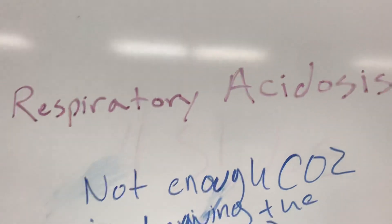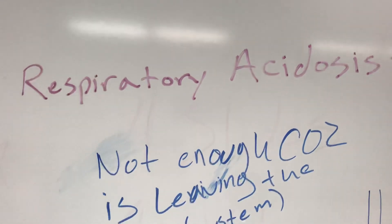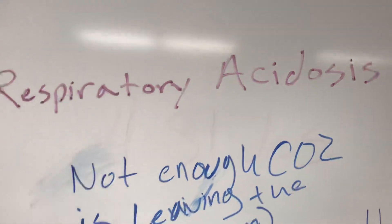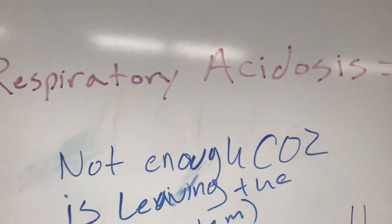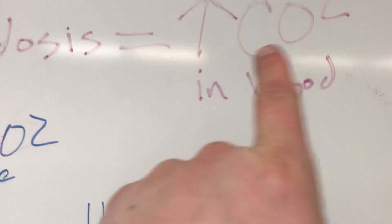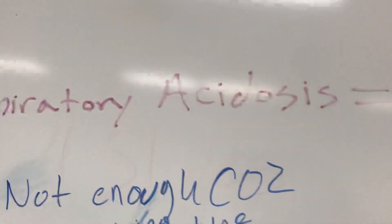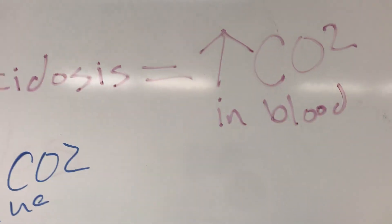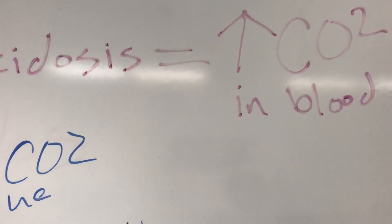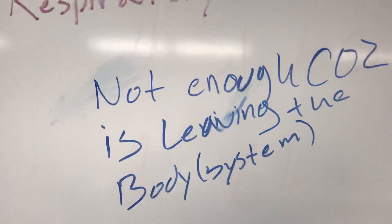In this video I'm going to go over what respiratory acidosis is, keeping it as simple and basic as possible. Whenever you see respiratory acidosis, that simply means that the CO2 — the carbon dioxide in the blood — is higher than it should be, dangerously high to where the blood becomes acidic. Every time you see respiratory acidosis, that means you have a lot of CO2 in your blood.